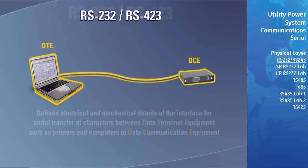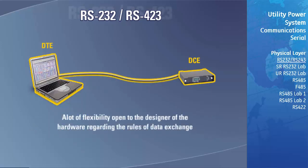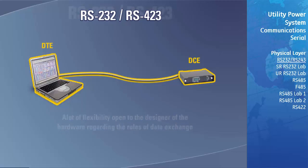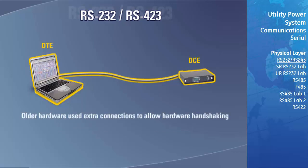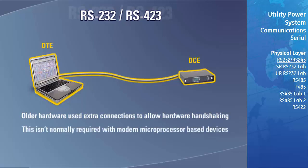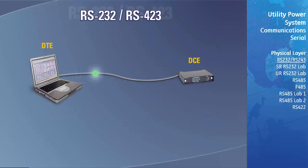This standard left a lot of flexibility open to the designer of the hardware regarding the rules of data exchange. Older hardware used extra connections to allow hardware handshaking. This isn't normally required with modern microprocessor-based devices such as the GE Multilin Protective Relays, and so we will only focus on the transmitting and receiving of signals during our discussion of the RS-232 standard.